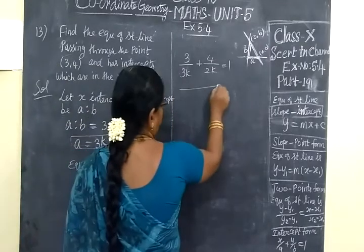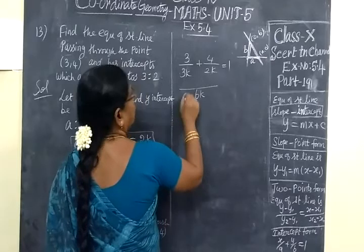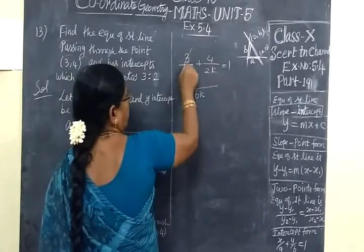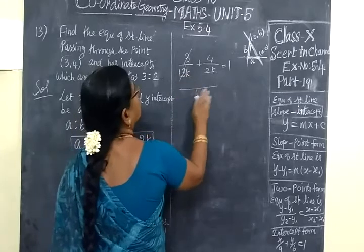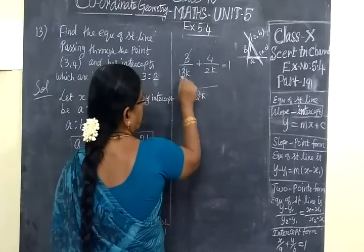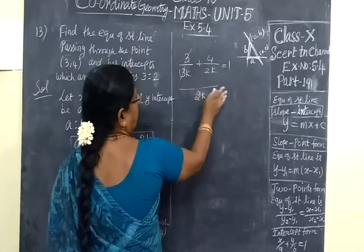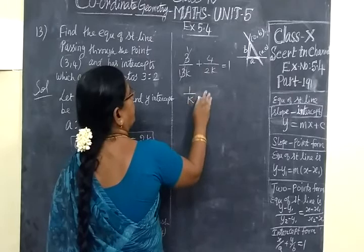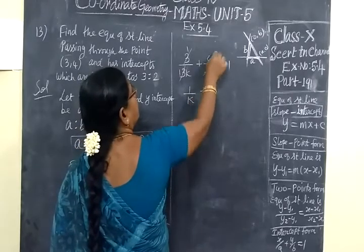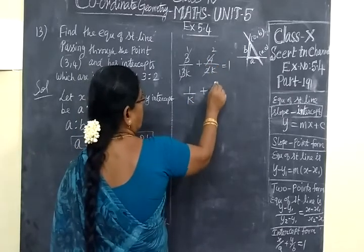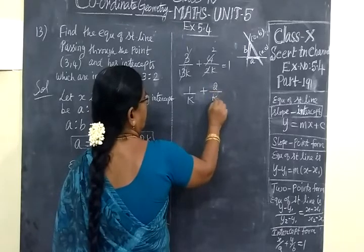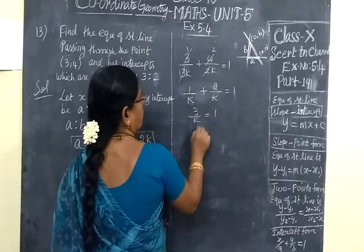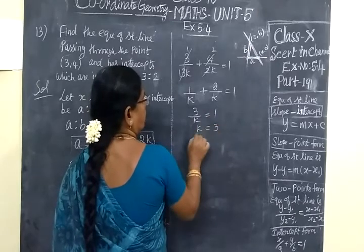Now LCM is 6K. Or you can cancel. So 1 by K plus 2 by K equals 1. So 3 by K equals 1. Therefore K equals 3.